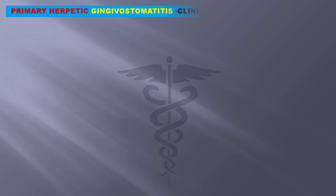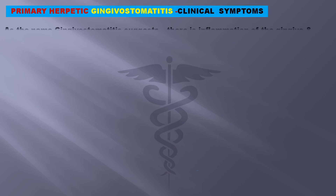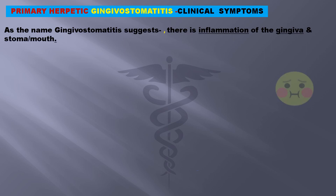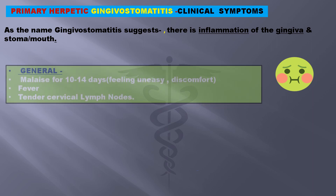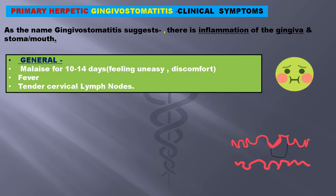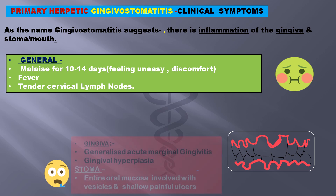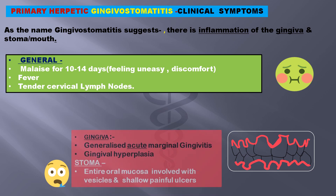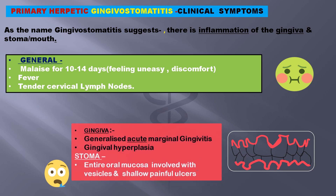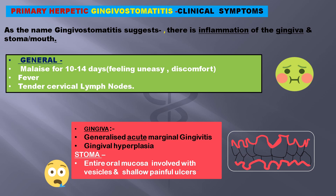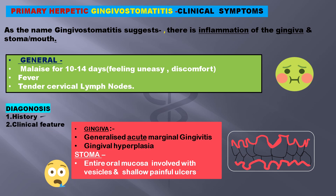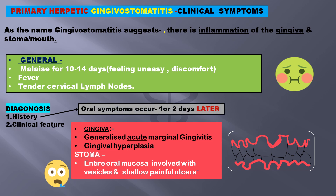Let us find out how the primary infection presents itself clinically. As the name gingivostomatitis suggests, there is inflammation of the gingiva and stoma. General symptoms include malaise for 10–14 days — malaise is a feeling of uneasiness or discomfort — the patient could have fever, and the cervical lymph nodes are tender. The gingiva shows generalized acute marginal gingivitis along with gingival hyperplasia. The entire oral mucosa shows inflammation with vesicles and shallow painful ulcers. Diagnosis can be based on oral symptoms appearing 1–2 days later and the typical feature of gingiva with marginal gingivitis and hyperplasia.